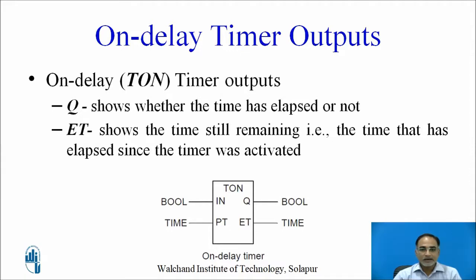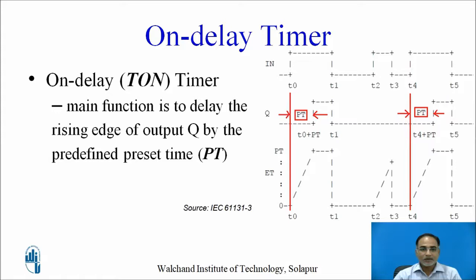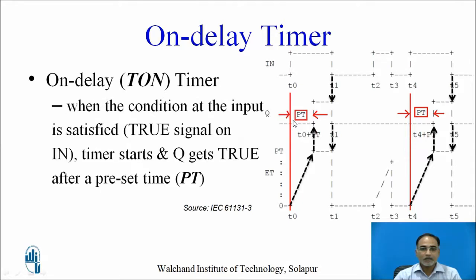The main function of the on-delay timer, also known as TON, is to delay the rising edge of Q by the predefined preset time. At t0, when the input changes from 0 to 1, the timer starts immediately and the ET value increments toward PT. When ET equals PT, Q changes from 0 to 1. The difference between the rising edge of input and the rising edge of Q is the PT duration.